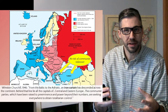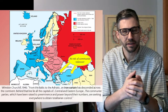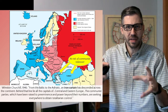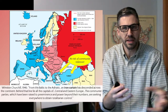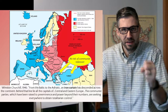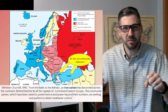As Winston Churchill, Prime Minister of Great Britain, said in 1946: "From the Baltic — that's the sea at the north of Europe — to the Adriatic down by Italy, an iron curtain has descended across the continent. Behind that line lie all the capitals of Central and Eastern Europe. The communist parties, which have been raised to preeminence and power beyond their numbers, are seeking everywhere to obtain totalitarian control." So we have communist totalitarian systems being set up in all these countries, and nations like Turkey and Greece are suddenly at risk of takeover by communist parties aided by the Soviets.